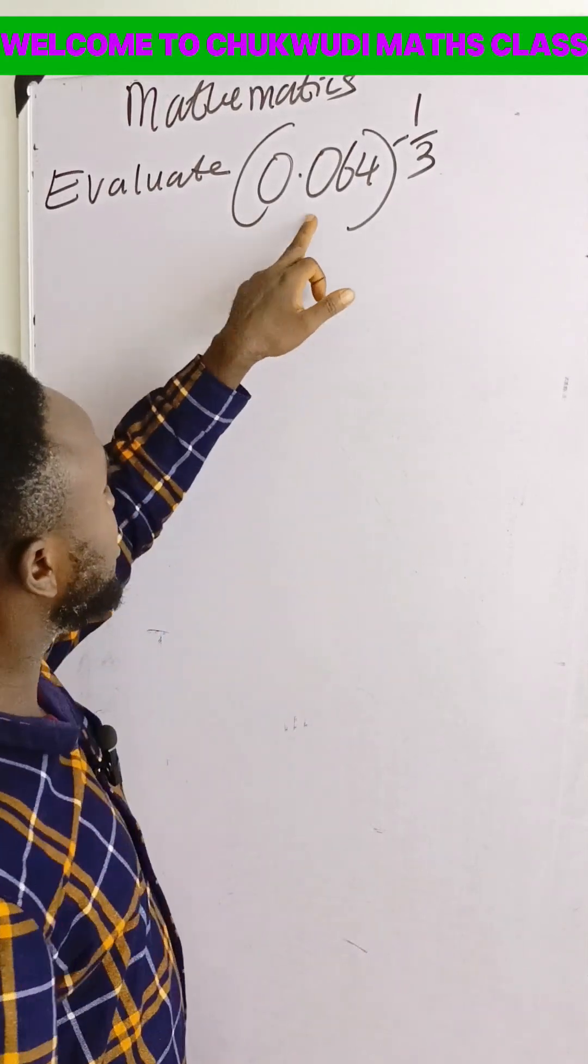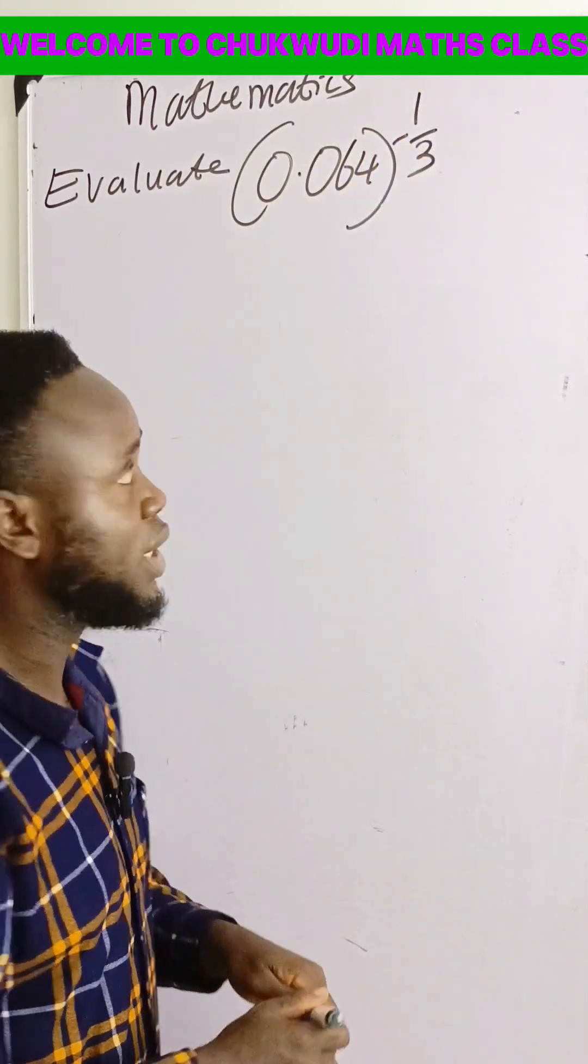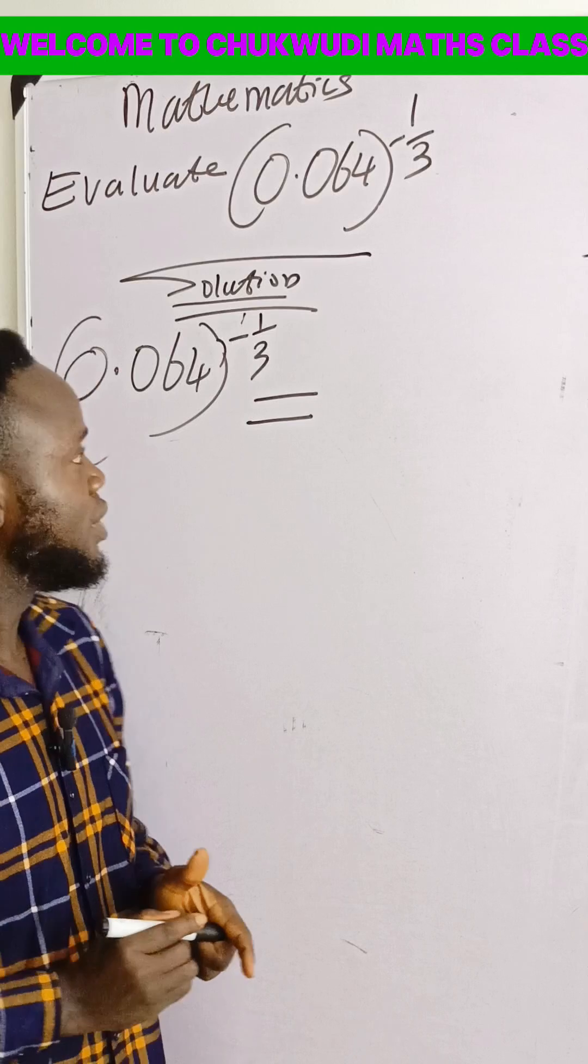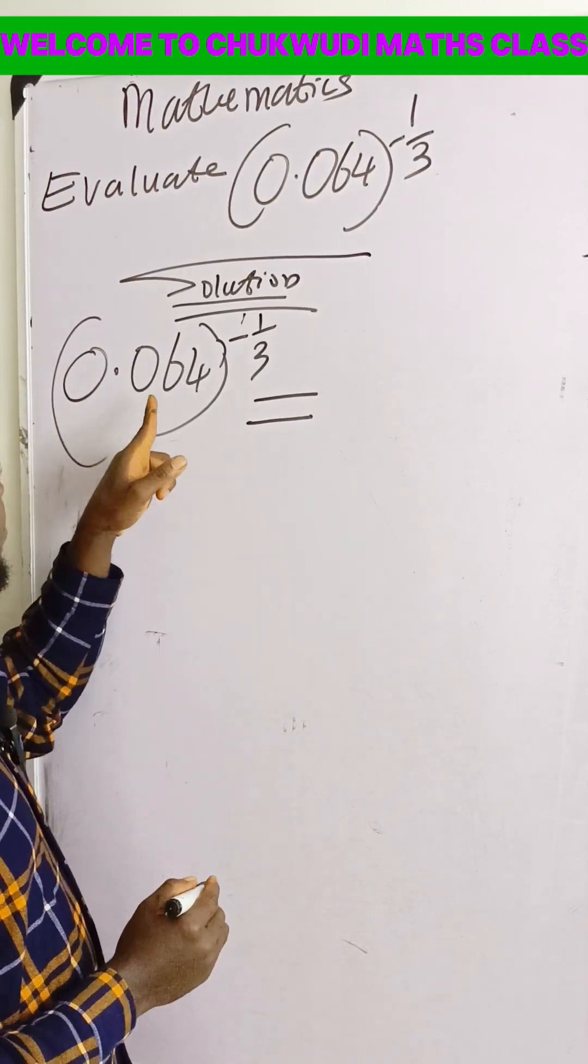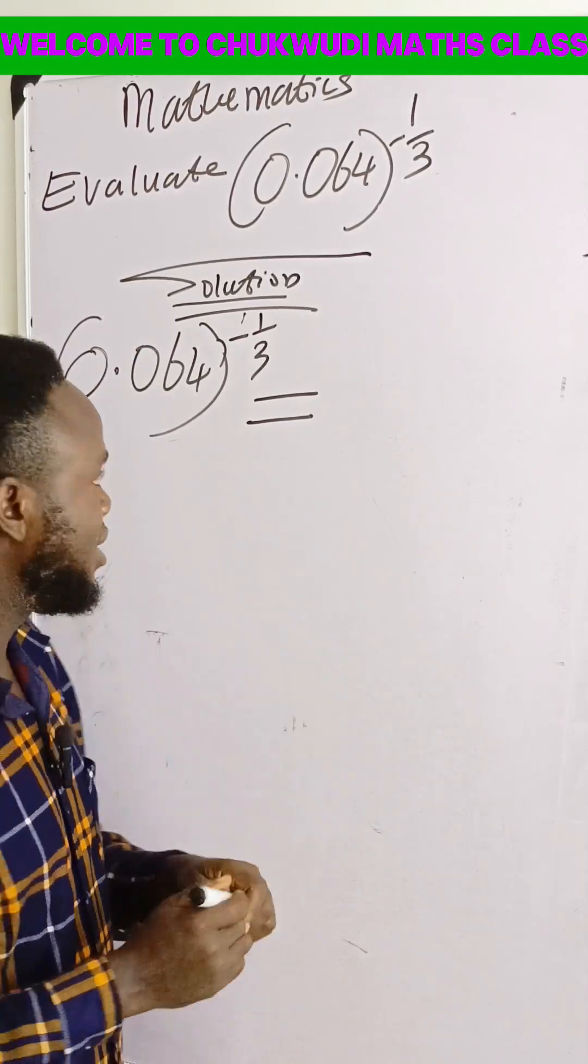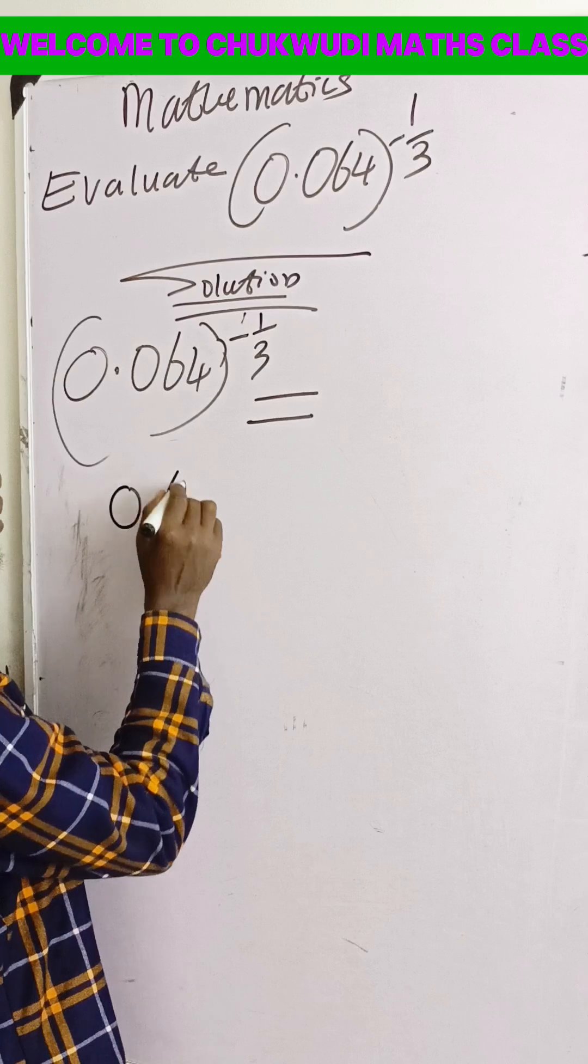Let us evaluate 0.064 raised to the power minus 1 over 3. You remember that if you have 0.064, you can convert this decimal to a fraction.